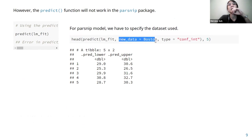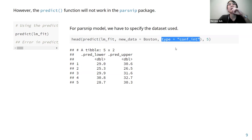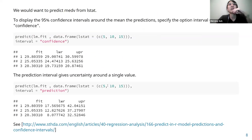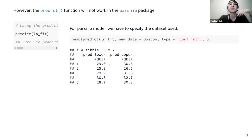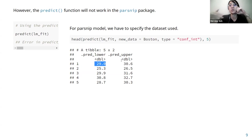The predict function in base R won't work directly in tidymodels (parsnip package). There you use predict with lm_fit, specify new_data, and specify the type. It's slightly different but more convenient as it predicts for the entire dataset, giving a range with lower and upper bound values.